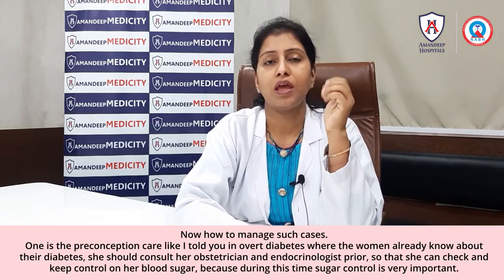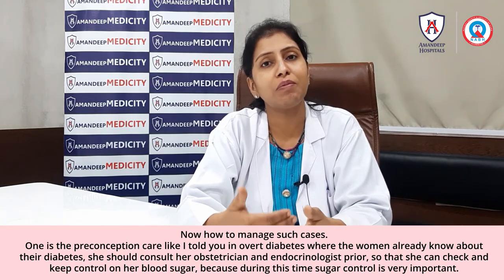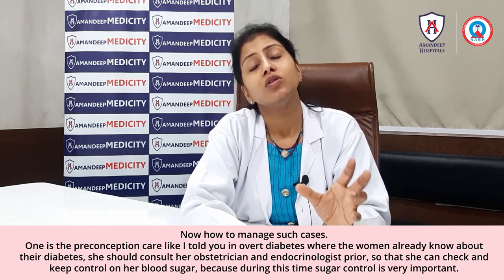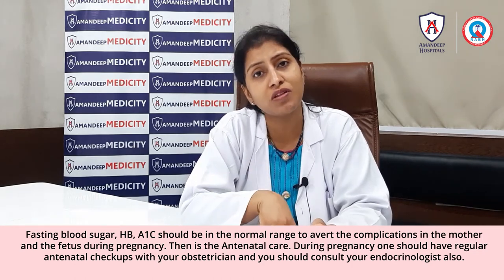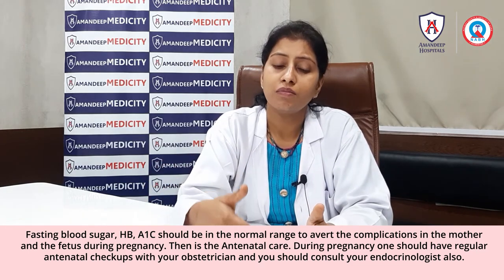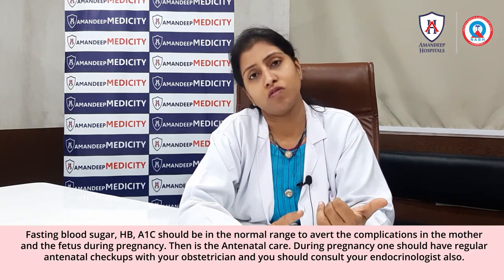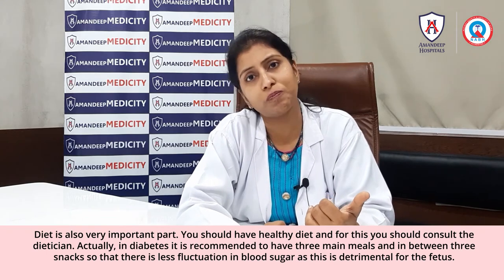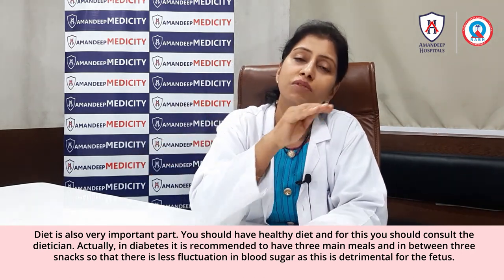How to manage such cases? One is preconceptional care. Especially in overt diabetes, where the lady already has known diabetes, she should consult her obstetrician and endocrinologist prior to pregnancy for tight control of blood sugar. Fasting blood sugar and HbA1c should be in the normal range to avoid complications in mother and fetus during pregnancy. During pregnancy, regular antenatal checkup with your obstetrician and endocrinologist is important. Diet is very important — you should have a regular healthy diet, and you can consult a dietician. In diabetes it is recommended to have three main meals and three snacks in between, so that there are no major fluctuations in blood sugar.